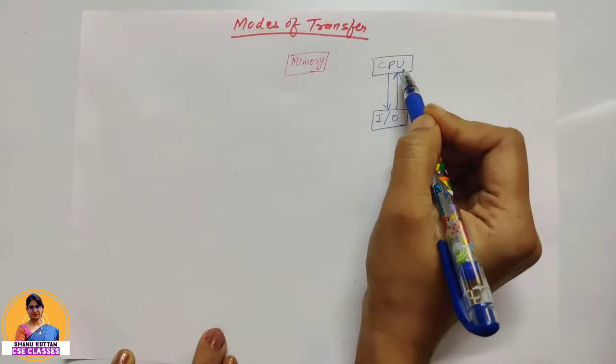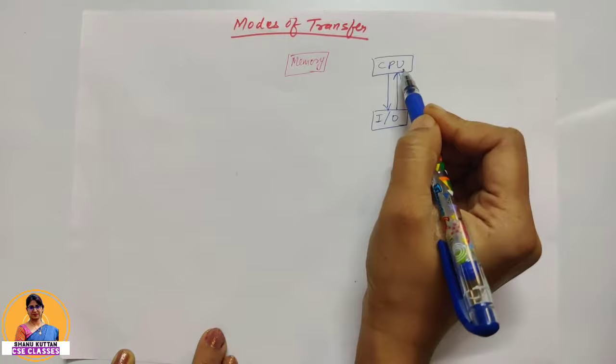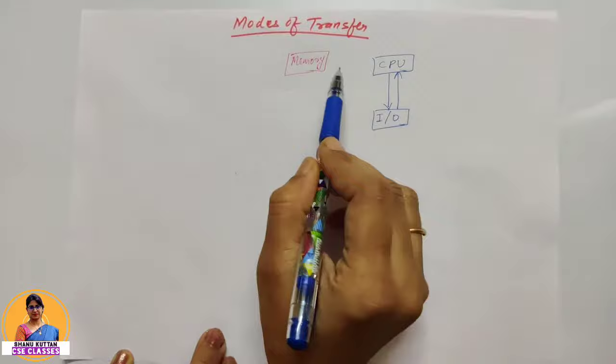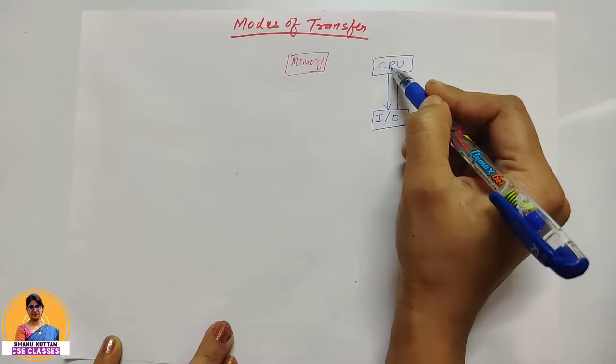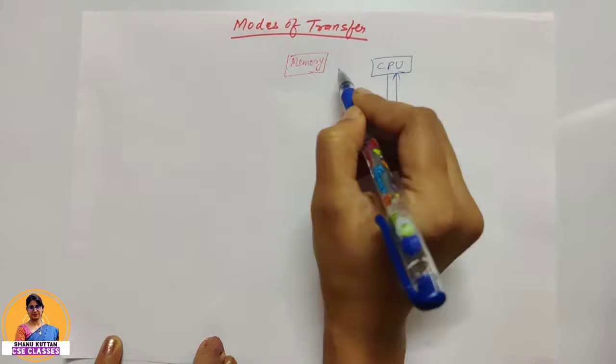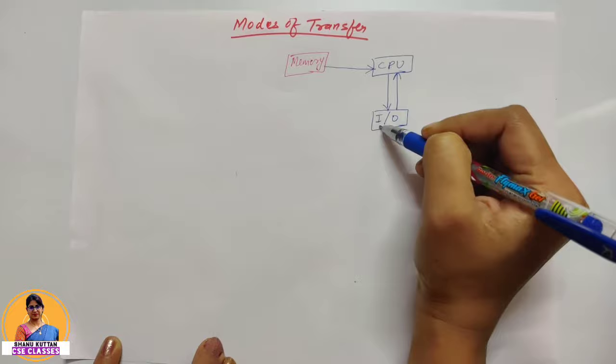So CPU only executes the instructions, but the ultimate source or destination between the I/O devices and the CPU is memory. If you want to send data from CPU to I/O devices, where is it stored? It remains in memory. And if you read some data from I/O devices, where is it stored? It is stored in memory.